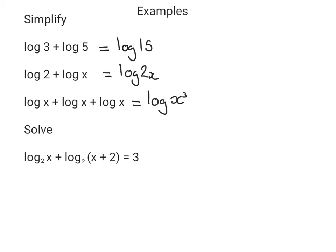But let's look at this other problem we've got here. So we've got log to the base 2 of x plus log to the base 2 of x plus 2. They're both to the same base, so we can add them together to give us log to the base 2 of x squared plus 2x, and that equals 3.